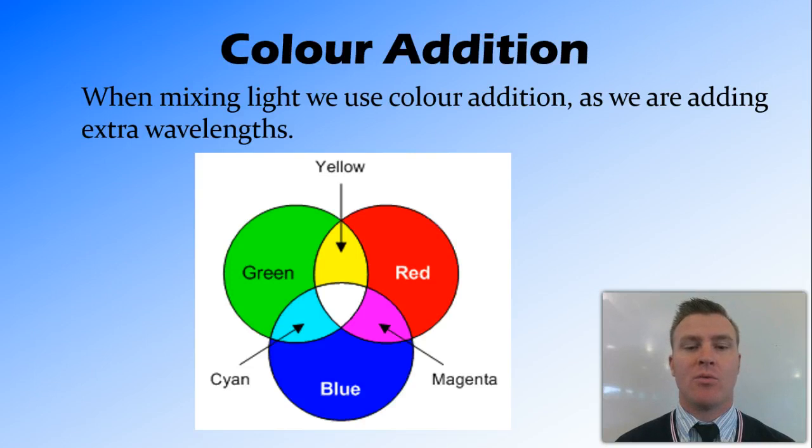So for example, if you have green light and red light and you shine them both on the same area, we will see yellow light and yellow is a mixture of green and red. Similarly, if you were to mix blue and red light, you'd get magenta and if you mix all three colours, green, red and blue, you'll end up with white light.